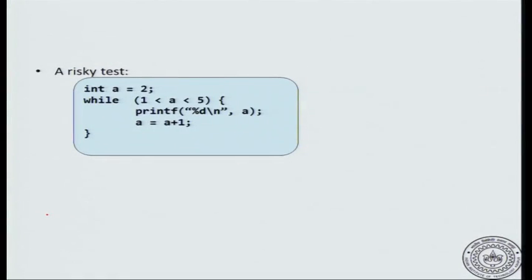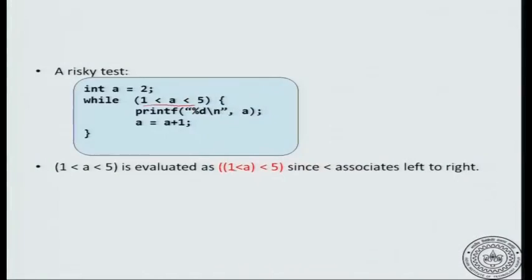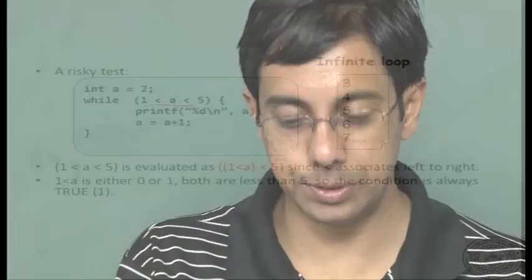Here is a common mistake people make. Because this is similar to mathematical notation, when you want to check that a is between 1 and 5, what happens if you write 1 < a < 5? C will apply precedence and associativity — since it is the same operation, only associativity applies, which is left to right. So this evaluates as (1 < a) < 5. Now if a is 2, then 1 < a is false, so this becomes 0 < 5, which is true. If you execute this code it will become an infinite loop because this expression always evaluates to true.